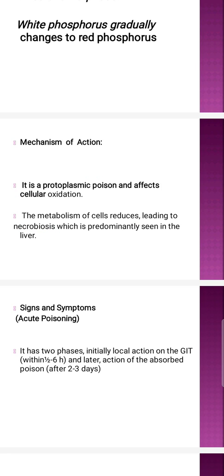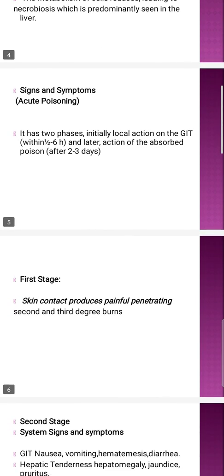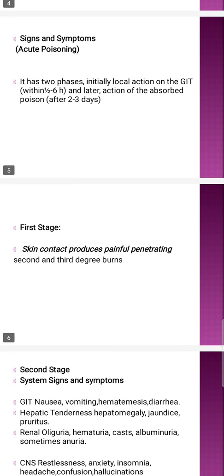What are the signs and symptoms in the case of acute poisoning of phosphorus? Basically, in two phases you can see acute poisoning. Initially you will see a localized action in the GIT, mostly within half to six hours. Then later on, phosphorus is absorbed within the GIT, and you will see the absorbed systemic action after 2 to 3 days.